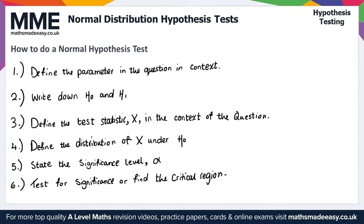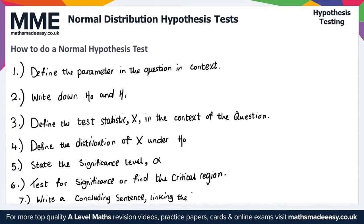Finally, step seven: we write a concluding sentence linking the acceptance or rejection of H0 to the context of the question. That gives us everything we need for how to do a normal hypothesis test.